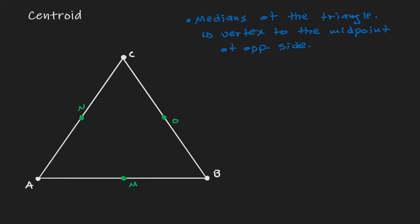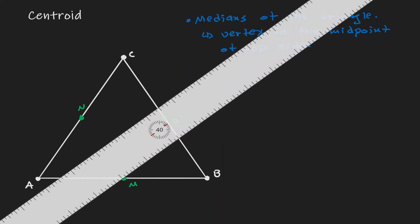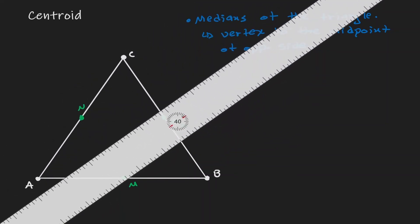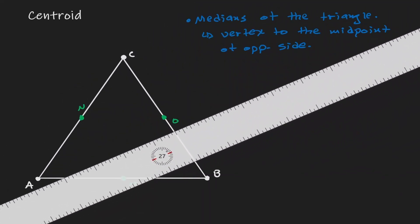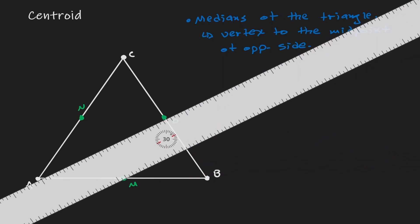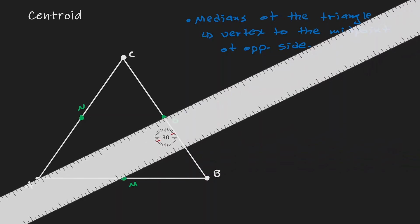If we want to draw our median, we need to get a ruler and join the vertex to the midpoint of the opposite side. So let's connect A to O — connecting the vertex to the midpoint of the opposite side. It has to stop, so it is not a line but a line segment.